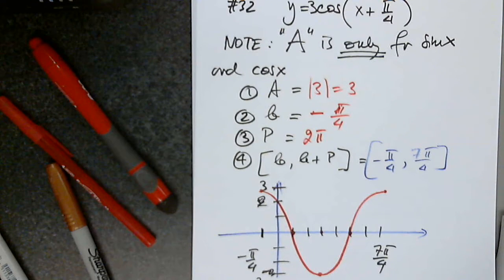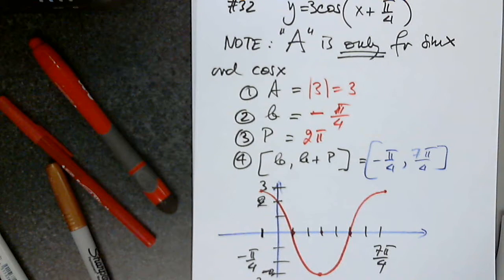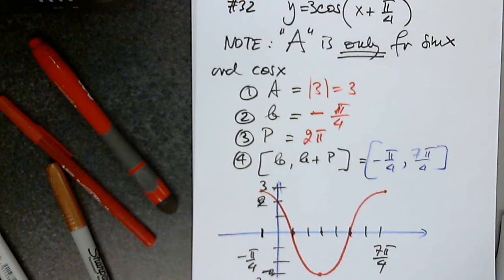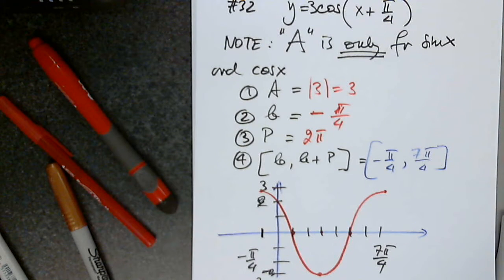How do we get 7 pi over 4? It's negative pi over 4 plus 2 pi. Since 2 pi equals 8 pi over 4, then 8 pi over 4 minus pi over 4 is 7 pi over 4 — you need the same denominator.